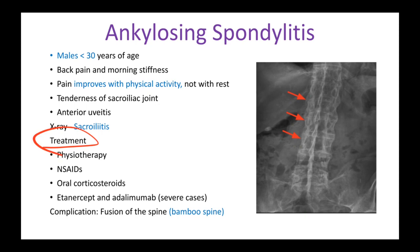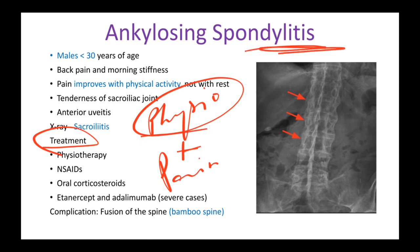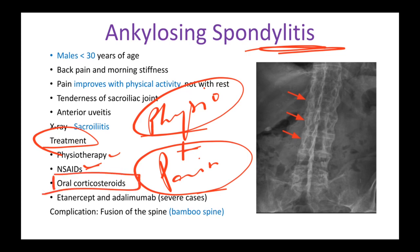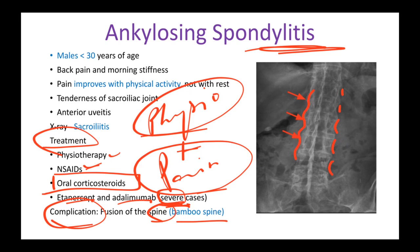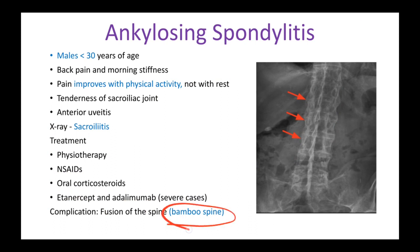Management for ankylosing spondylitis is physiotherapy plus pain control. Physiotherapy decreases inflammation and reduces workload on the spine. NSAIDs are given to relieve pain. If there is significant inflammation, oral corticosteroids are added. In very severe cases, the patient is given etanercept and adalimumab. The main complication is bamboo spine — where the vertebrae fuse together, eliminating the normal spaces between them, as seen on imaging.